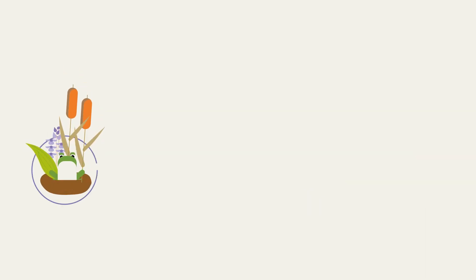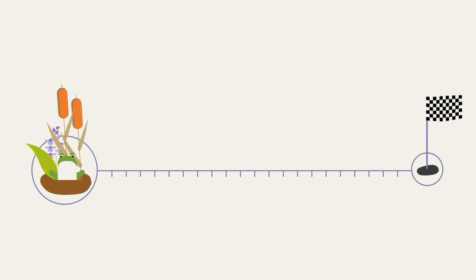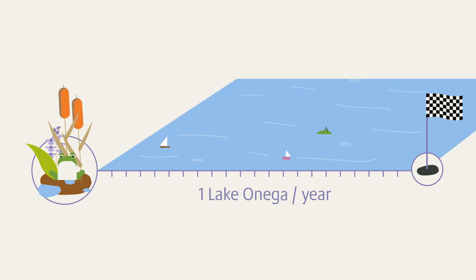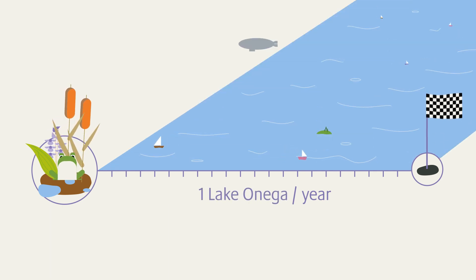To achieve our climate goals, we need peatlands and we need them wet. Specifically, this means that we in Europe must re-wet at least 1 million hectares of drained peatlands per year. This roughly corresponds to the area of the second largest lake in Europe, Lake Onega.